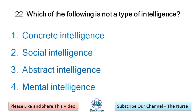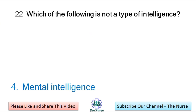Next question: Which of the following is not a type of intelligence? Concrete intelligence, social intelligence, abstract intelligence, mental intelligence. Correct answer: Mental intelligence.